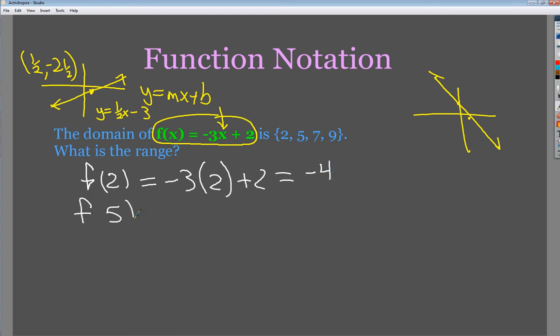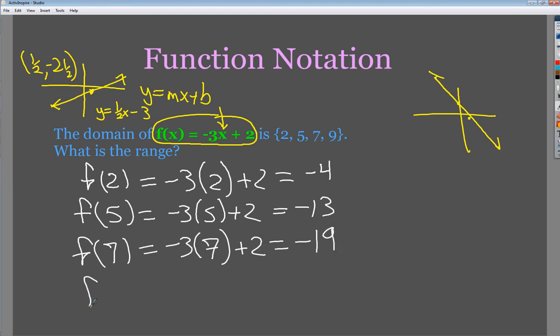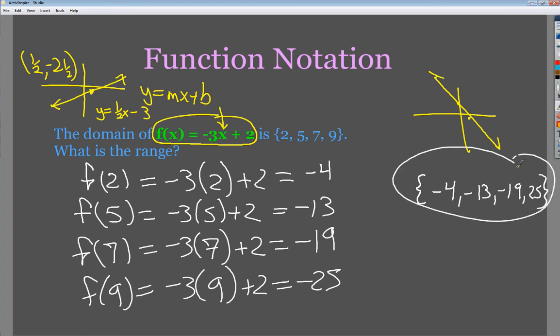Basically, I'm making coordinates. So my first one, I would say, instead of f of x, I want it at 2. So I'm going to say f of 2 is equal to negative 3, and instead of times x, I'm going to put times 2 plus 2. So all I need to do is negative 3 times 2, which is negative 6, plus 2 more gives me negative 4. My f of 5, negative 3 times 5 plus 2. So you get negative 15 plus 2 more gives you negative 13. f of 7, negative 21 plus 2 gives you negative 19. And finally, negative 27 plus 2 more gives you negative 25.